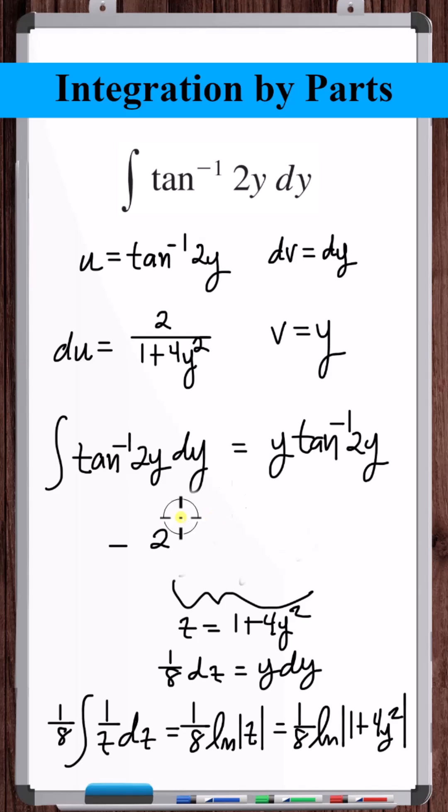Substituting this back in, multiply the 2 by 1 eighth to get 1 fourth. Now add the plus c, and that's the integral.